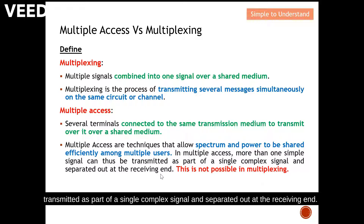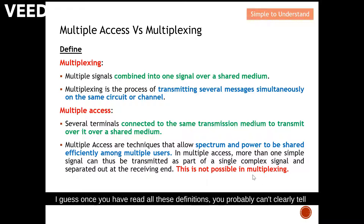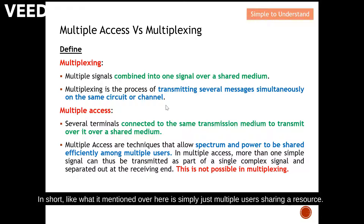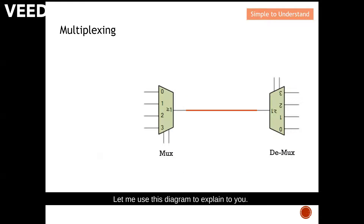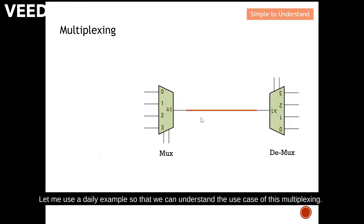In multiple access, signals can be separated out at the receiving end — this is not possible in multiplexing. Once you've read all these definitions, you probably still can't clearly tell what the key difference is between multiple access and multiplexing. In short, both seem to involve multiple users sharing a resource. Let me use this diagram to explain, with a daily example so that we can understand the use case of multiplexing.